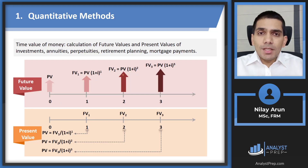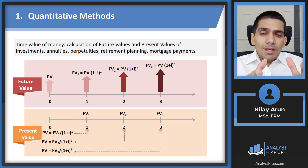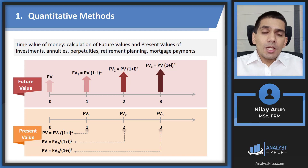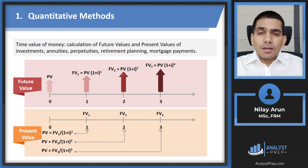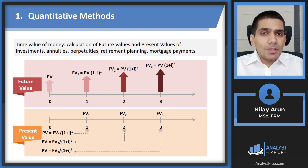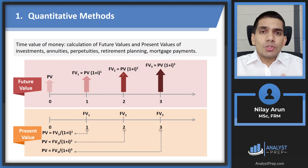First, let's look at time value of money in quantitative methods. In TVM, you use it for the calculation of future values, present values, annuities, and perpetuities. You use it in problems for retirement planning — for example, if you need X amount of money every single month after retirement, how much should you invest right now? You can also use it to calculate mortgage payments and other annuity problems.